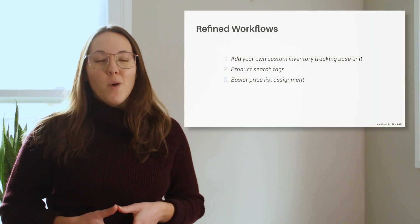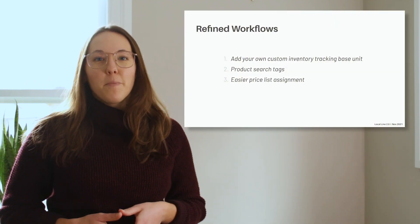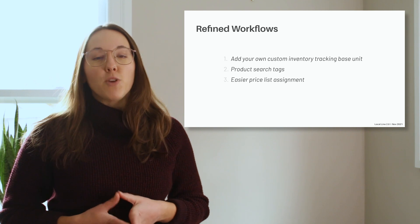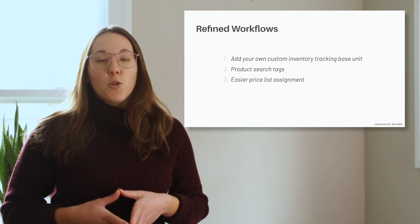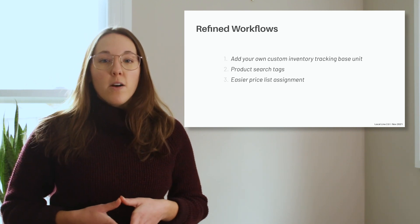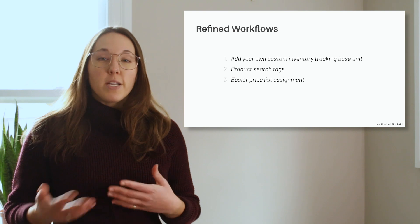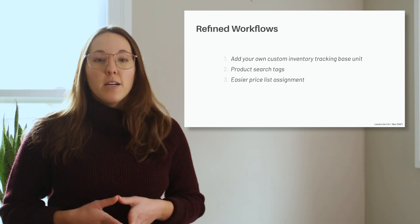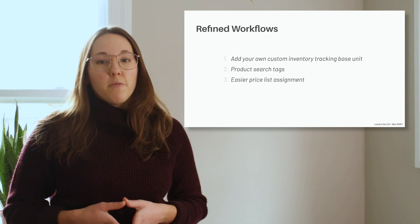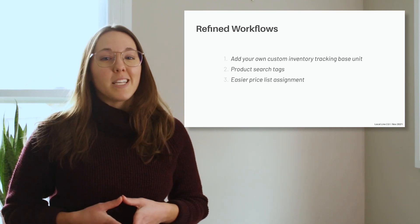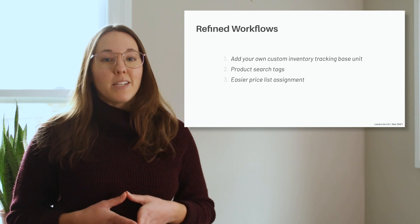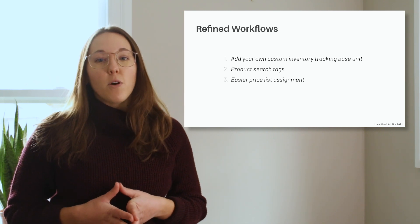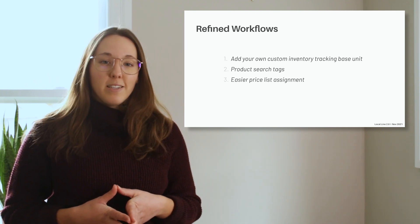We've also added a few other features that you've been asking for. First, you can add your own custom inventory tracking base unit. Right now, you're able to use base units that already exist in the platform like each or pound, but for some, this may have prevented you from presenting your products exactly how you'd like to. With LocalLine 2.0, you'll be able to add as many of your own base units as you'd like.